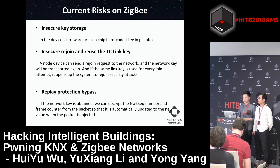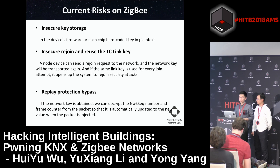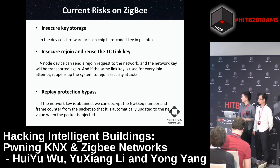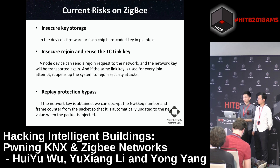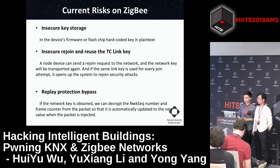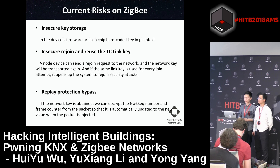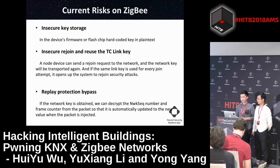The third risk is insecure key storage. If the device firmware or flash chip contains a hard-coded key in plain text, that is a significant risk. The fourth risk is insecure rejoining and reuse of the trust center link key. Many devices can send a rejoin request and the network key will be re-transported. If the same link key is used for every rejoin request, it opens the system to rejoining security risks. The last risk is replay protection bypass. If the network key is obtained, we can decrypt the network sequence number and frame counter from the packet, which is automatically updated when the packet is injected.